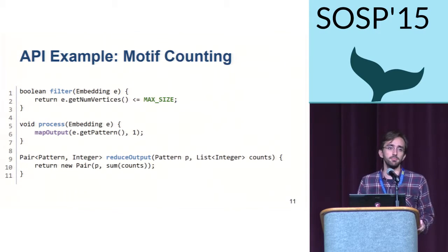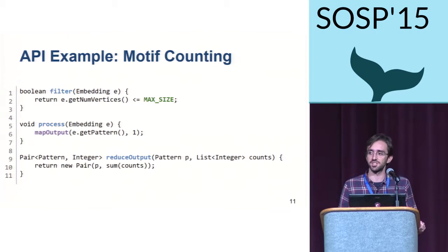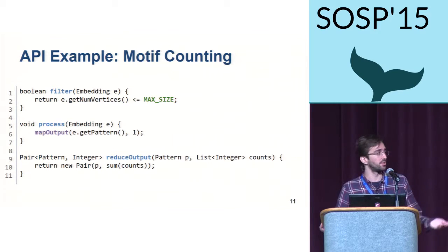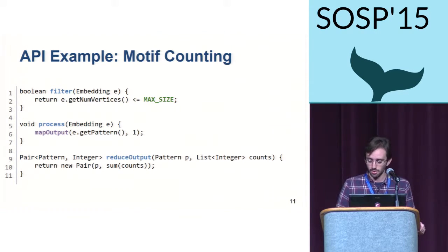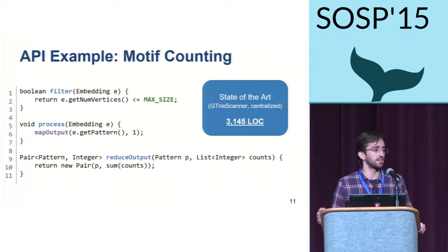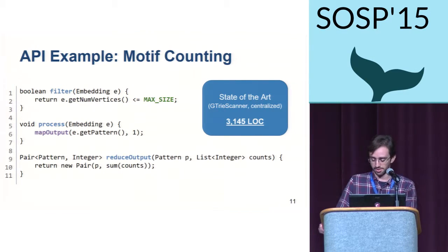Similarly, for motif counting — where we are interested in counting the number of subgraphs that share the same structure — we can again achieve a very efficient and distributed implementation with just 11 lines of code, whereas another state-of-the-art implementation, GtryScanner, requires more than 3,000 lines of code to achieve the same thing in a centralized manner with no distribution.